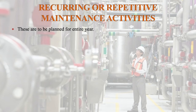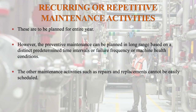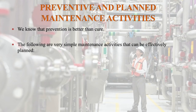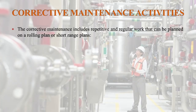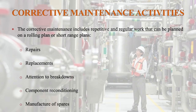Effective planning contributes to improved utilization of machines and maintenance workforce by reducing delays and interruptions, improved quality of maintenance work by adopting the best methods and assigning the most skilled workers, and reduced maintenance costs. Recurring or repetitive maintenance activities are to be planned for the entire year. Preventive maintenance can be planned long range based on predetermined time intervals, failure frequency, or machine health conditions. Other activities such as repairs and replacement cannot be easily scheduled. The corrective maintenance includes repetitive and regular work planned on a rolling or short-range plan: repairs, replacements, attention to breakdowns, component reconditioning, and manufacture of spares.